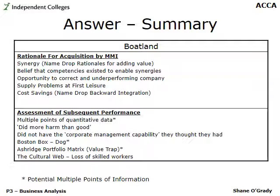For the assessment of Boatland's subsequent performance: there was absolutely no diplomatic language — 'this acquisition did not prove to be successful.' The narrative and quantitative data both clearly showed this. MMI did more harm than good. They didn't have the corporate management capability they thought they had. The Boston box classifies Boatland as a dog. Under the Ashridge portfolio matrix, Boatland was a value trap — there was a parenting opportunity because management was poor, but MMI lacked the critical success factor to deliver it.